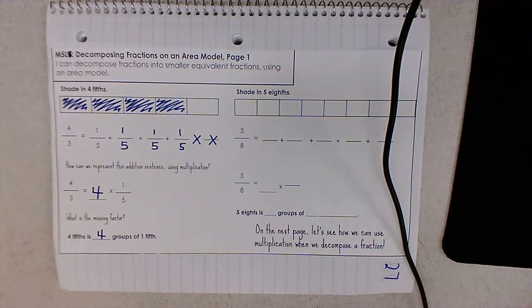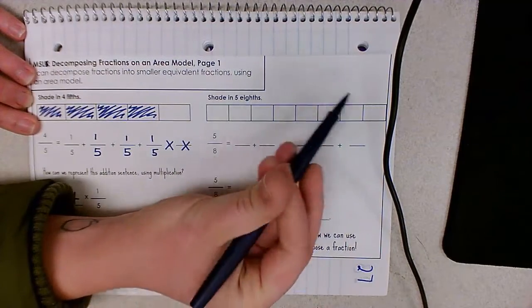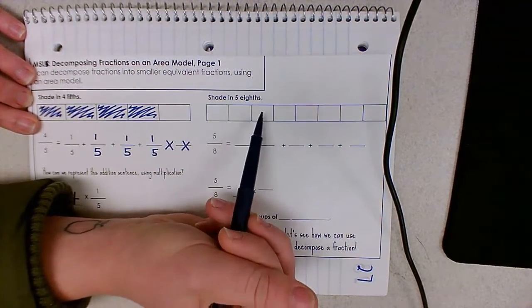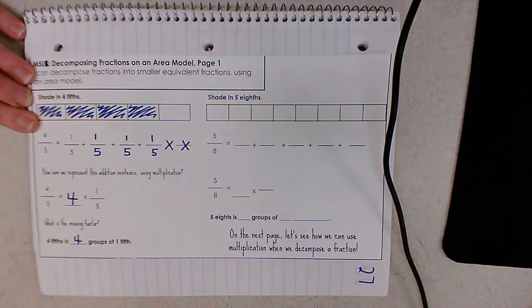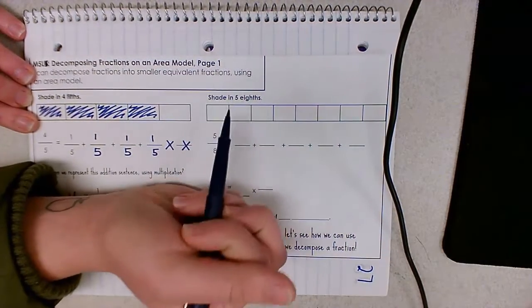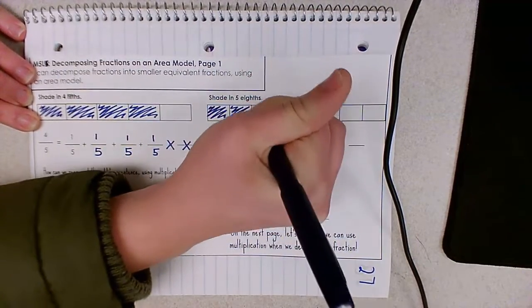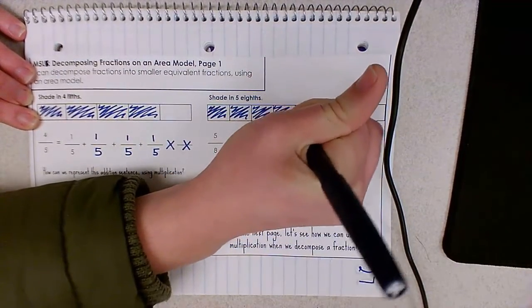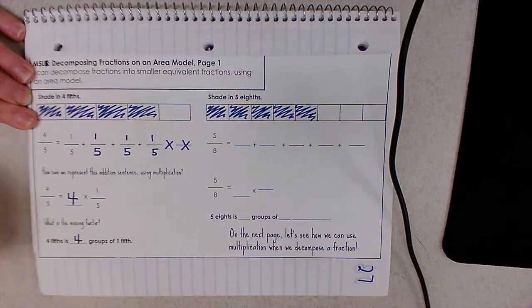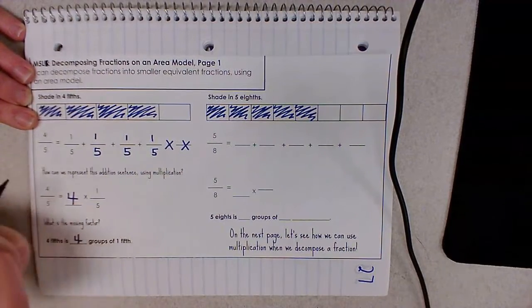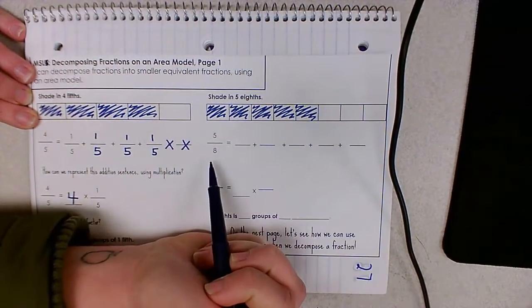Let's practice this skill again, but with five-eighths. Now our tape diagram represents one whole unit broken into eight equal pieces representing eighths. Shade in five-eighths: one, two, three, four, and five.